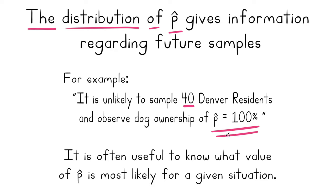You could say you didn't need the central limit theorem to know it's unlikely that everybody sampled owns a dog. Some of the important concepts are somewhat intuitive, and that's a nice thing about statistics in general. A value of 100 percent for P-hat would be unlikely, but it's often useful to know what value of P-hat is most likely.